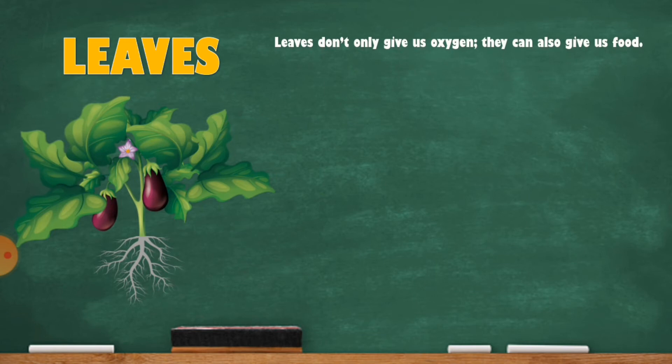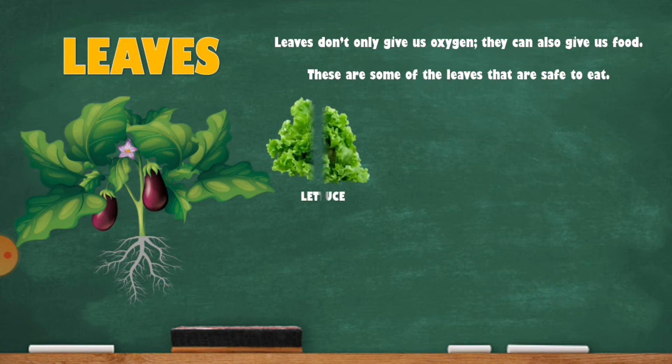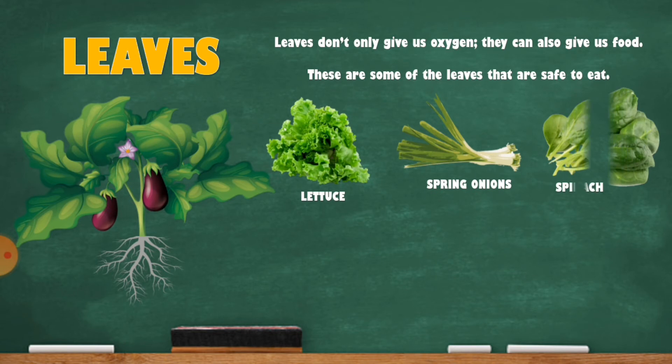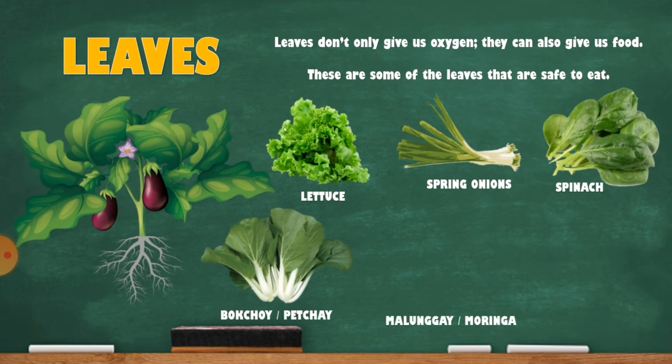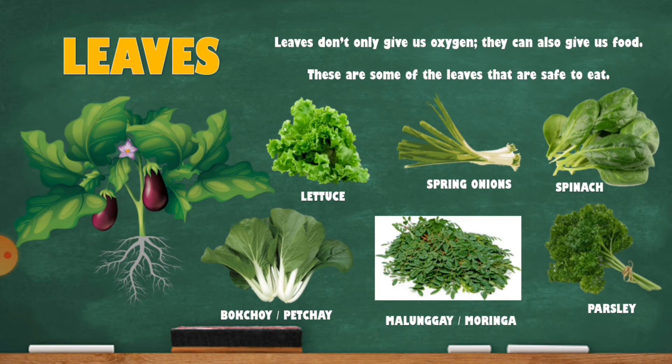Leaves don't just give us oxygen, they can also give us food. These are some of the leaves that are safe to eat: lettuce, spring onions, spinach, bok choy or pechay, parsley, and malunggay or moringa.